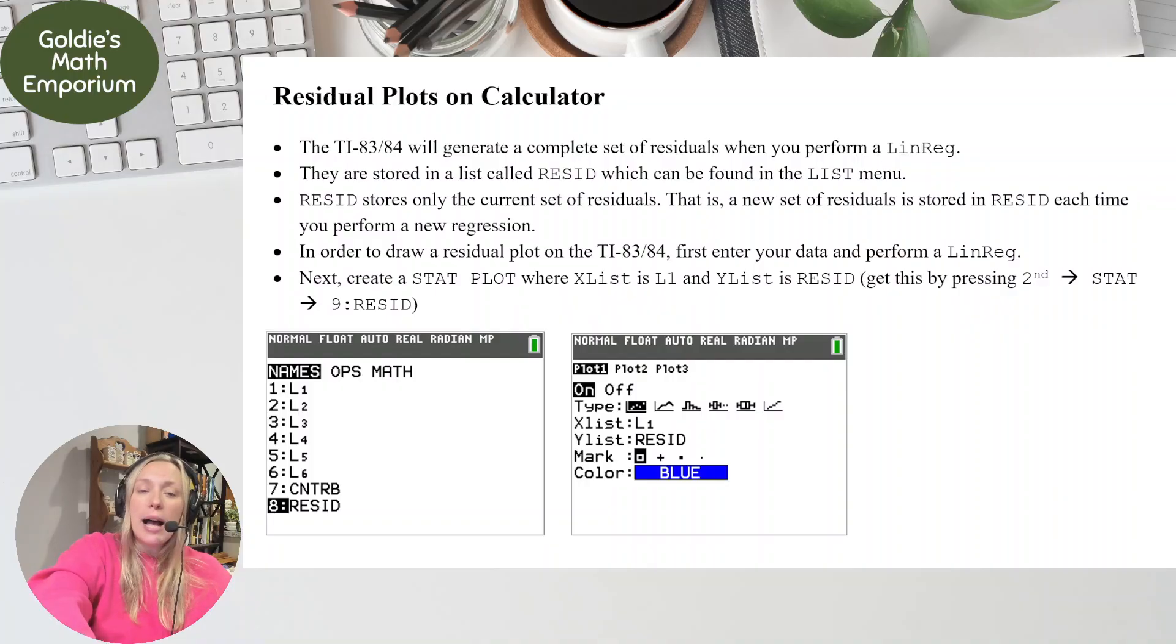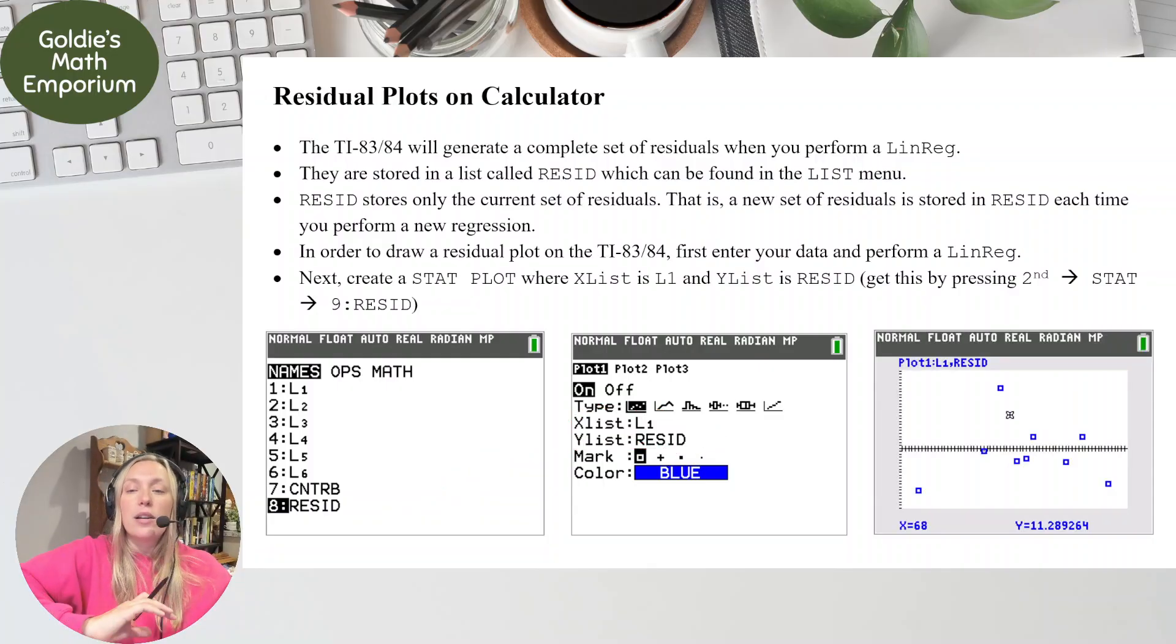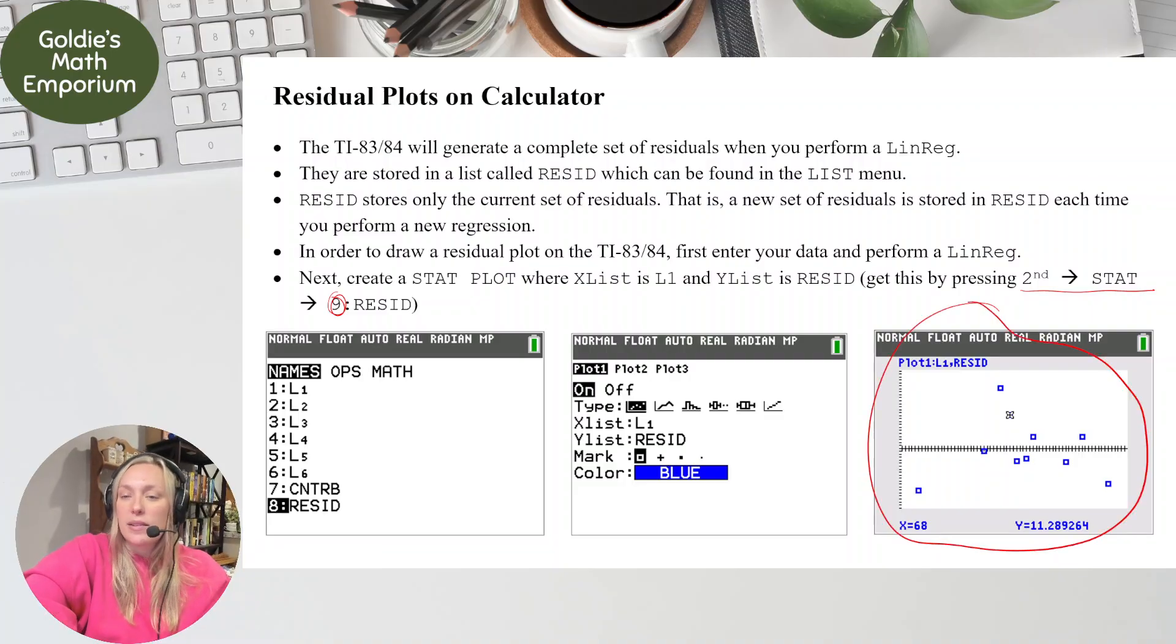In order to draw a residual plot, you have to first enter your data, enter L1 and L2, your X values and Y values, and then you have to perform a LIN-REG. You can't just enter in your values and then think that residuals good. You have to perform a LIN-REG, and then your residual list will be populated. And then if you go to stat plot, and your X list should be L1, and your Y list is when you want to type in that RESID list. Where you pull up this and you paste it right in here, then when you click, and remember you get the RESID list by pressing second stat and then going down to, it should be number eight RESID. Then you get it appearing, and then you might have to zoom stat, but then you get this residual plot.